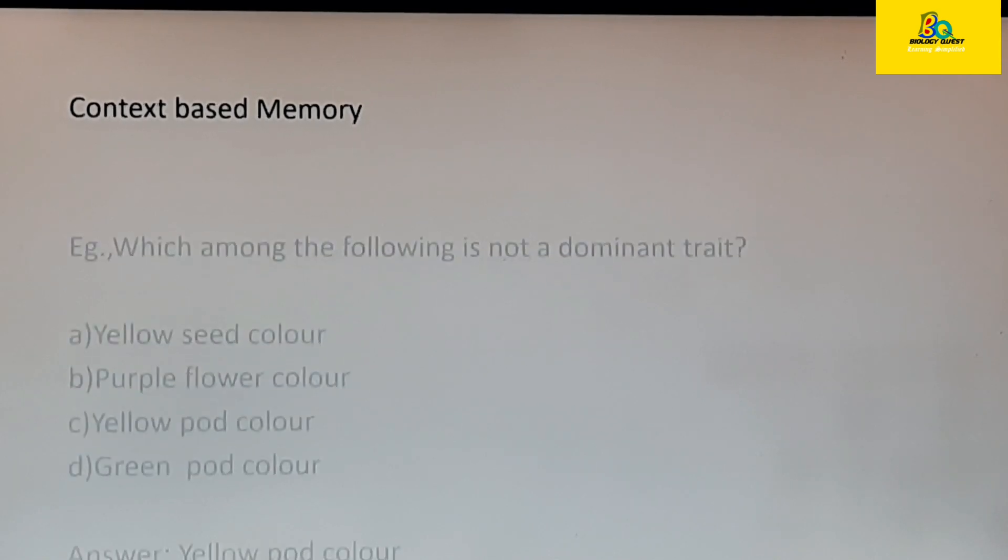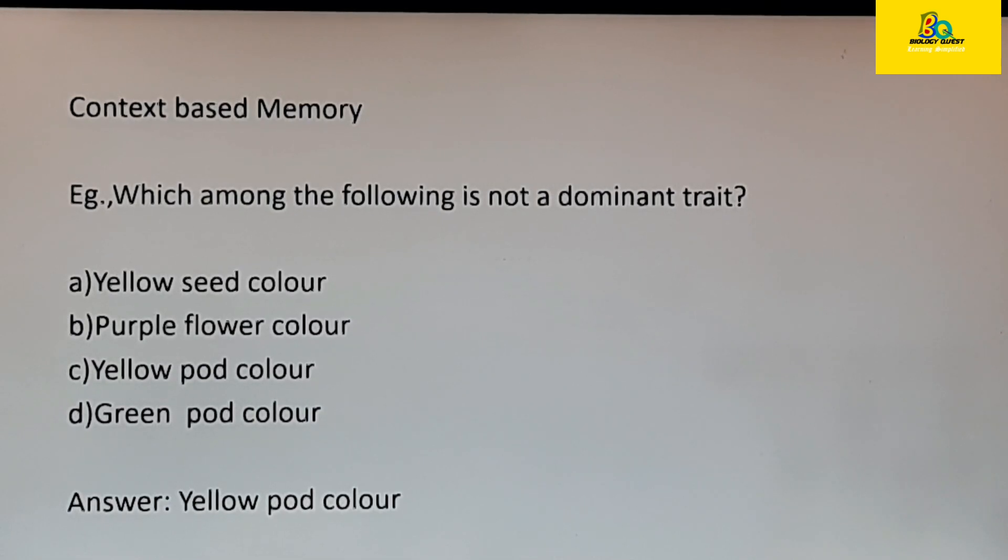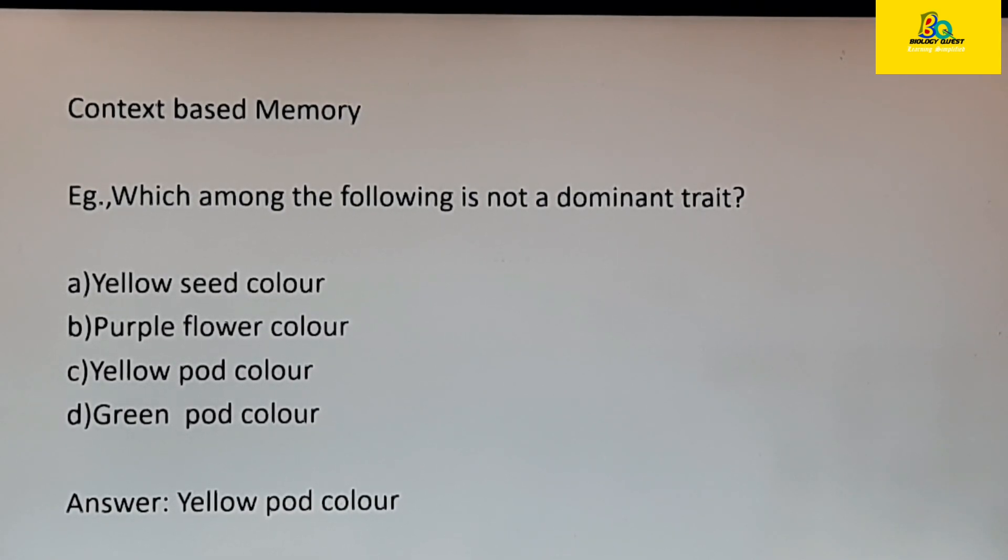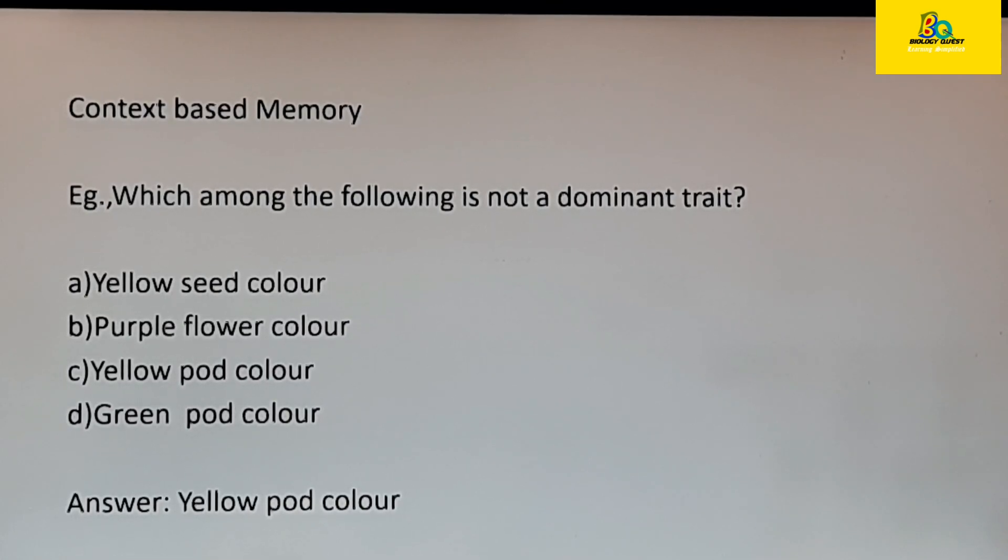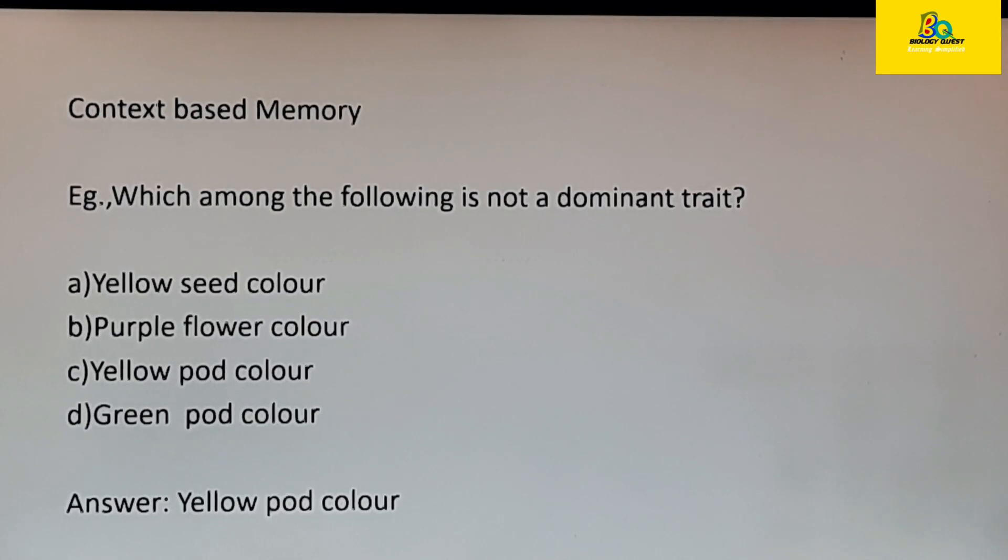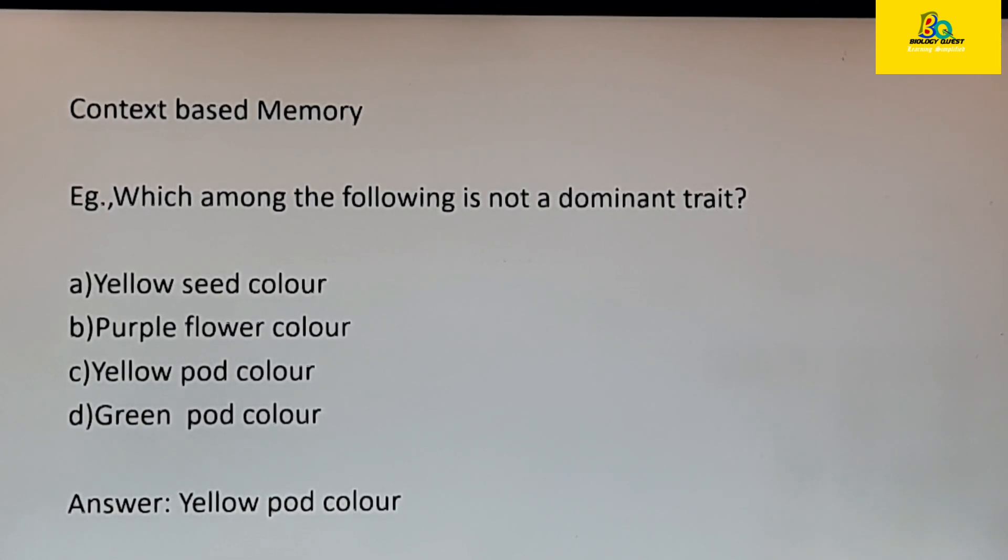Now next is context-based memory. Here you can see an example: which among the following is not a dominant trait. Several different options are given. Maybe first and the second option you might not be confused, but you will be confused with the third and the fourth option, option C and option D. In such cases, think of the situation in which you have studied this. Remember the page, the diagram, or the table or the picture in that page. Here in this case, it is a table which shows the characters which Mendel had selected for his experimental studies, the dominant and recessive traits of each character. Just think, remember that table, the pictures in the table, and you will surely come across the correct answer. This is called context-based memory.